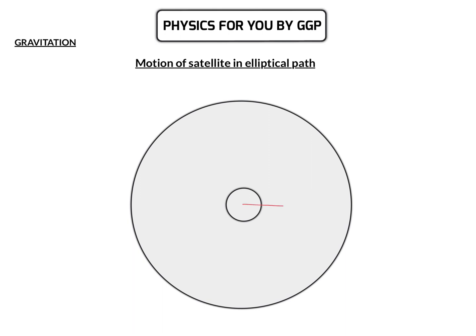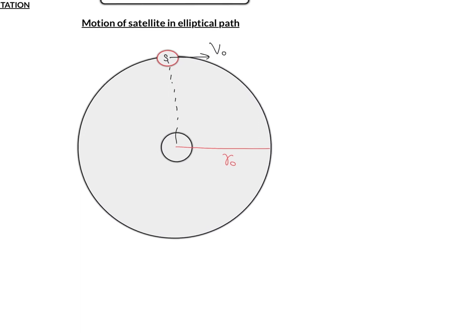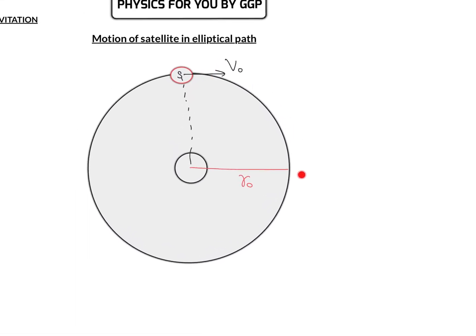If a satellite is moving in a circular orbit of radius R₀ with a velocity equal to its orbital velocity — which is √(GM/R₀) — then it moves in exactly a circular path. So if you place a satellite at a distance R₀ from the center of the planet and project it with velocity V₀ perpendicular to the radius vector, where V₀ equals √(GM/R₀), then it will move in a circular path.